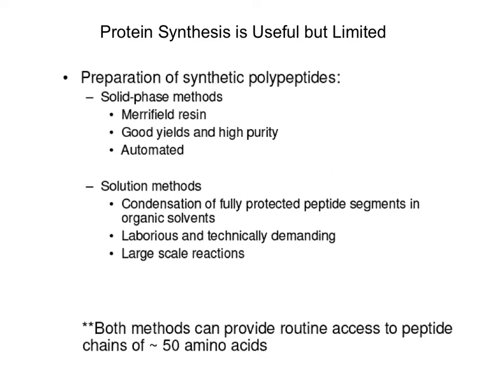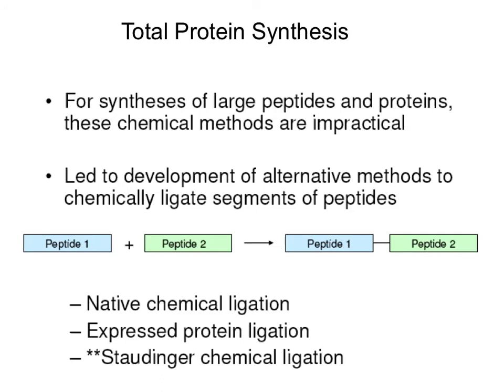Both solid phase and solution methods can provide access to peptide chains of approximately 50 amino acids. While that's great, that's the limitation — trying to get proteins larger than that is a challenge. So for the synthesis of large peptides and proteins, these chemical methods are impractical, leading to the development of alternative methods to chemically ligate segments of peptides to reach proteins greater than 50 amino acids.